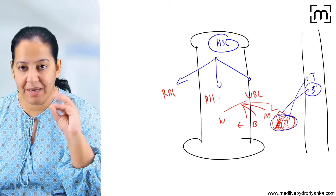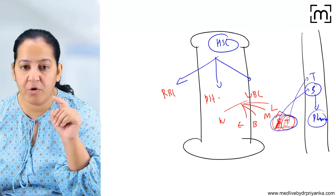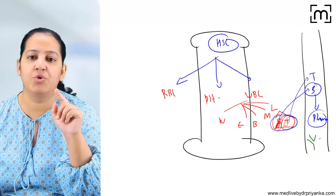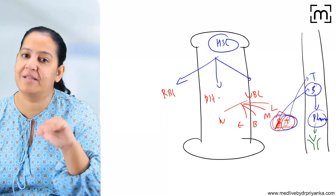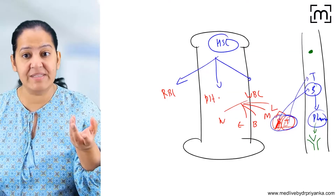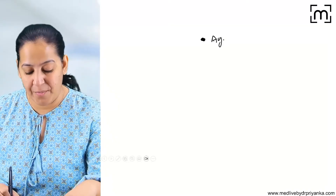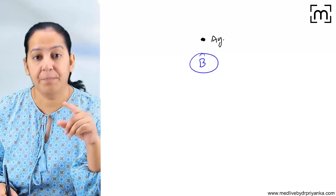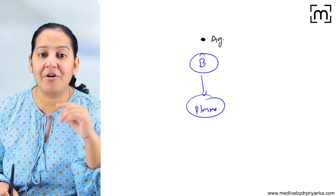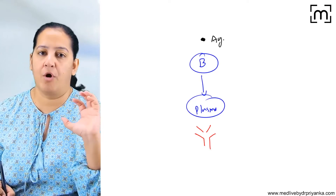I am interested in B lymphocyte. B lymphocyte will convert into plasma cells in the blood. Whenever any foreign particle enters, the plasma cells form immunoglobulin — the antibody. The antibody has two light chains and two heavy chains. So whenever any antigen enters the human body, the humoral immunity gets activated. The B lymphocyte converts into plasma cells and plasma cells form antibodies, which are known as immunoglobulin.